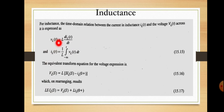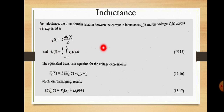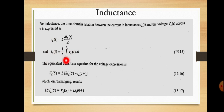The voltage and current are varying with time, so this is a time domain relation: Vl(t) = L × d(il(t))/dt. This is the same basic equation V = L × di/dt for an inductor. Similarly, the current through the inductor is il(t) = (1/L) × integral from minus infinity to t of Vl(t) dt. These are the basic equations for the inductor.